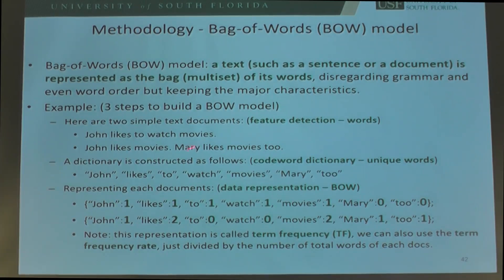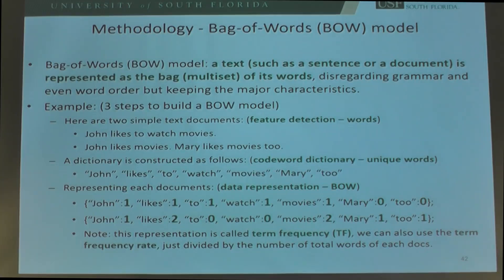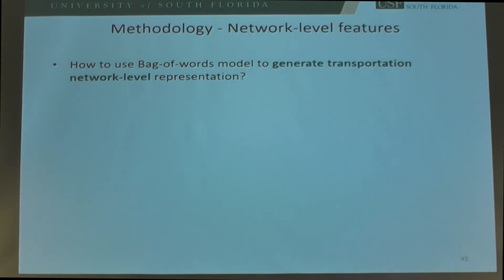For example, in the first sentence, Joan appeared once so we put 1 for Joan. There are many other representations beyond term frequency under the bag-of-words model. Now, how do we use the bag-of-words model to generate transportation network-level representation? First, we already have the link-level features as atomic features. Next, we identify the code-word dictionary — considering each type of link-level feature as one type of language, each language with its own dictionary.